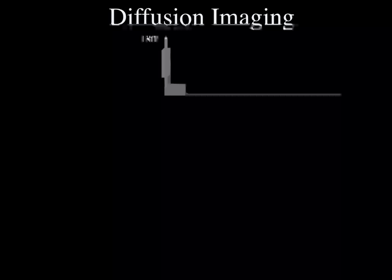That was basically to show that you can do things besides Fourier transform imaging, but the Fourier transform is really a very efficient way to do imaging in magnetic resonance. Let's move on to diffusion imaging. Sheila, what is diffusion imaging?